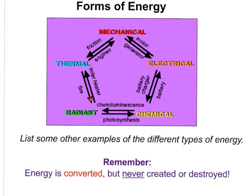For example, radiant energy from the sun is converted into chemical energy through photosynthesis when plants make their own food. Thermal energy is converted into radiant energy via fire. Radiant energy can also be transferred into thermal energy — heat. Automobiles use chemical energy: they break down gasoline chemically to produce the energy needed to make the mechanical car function.